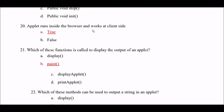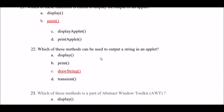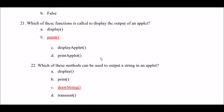Applet runs inside the browser and works at client side — is this true or false? It is true. Which of these functions is called to display the output of an applet? Option A: display method. Option B: paint method. Option C: display applet method. Option D: print applet method. Right answer is Option B — paint method is called to display the output of an applet.